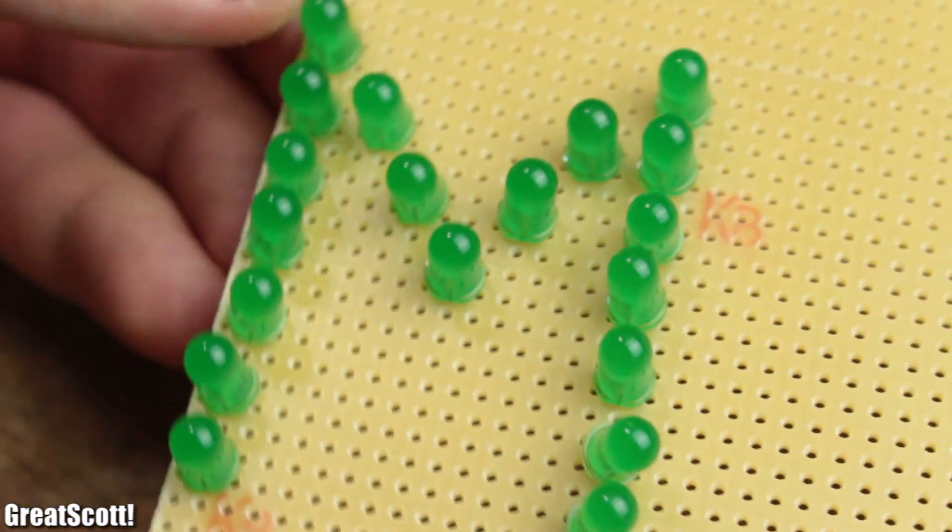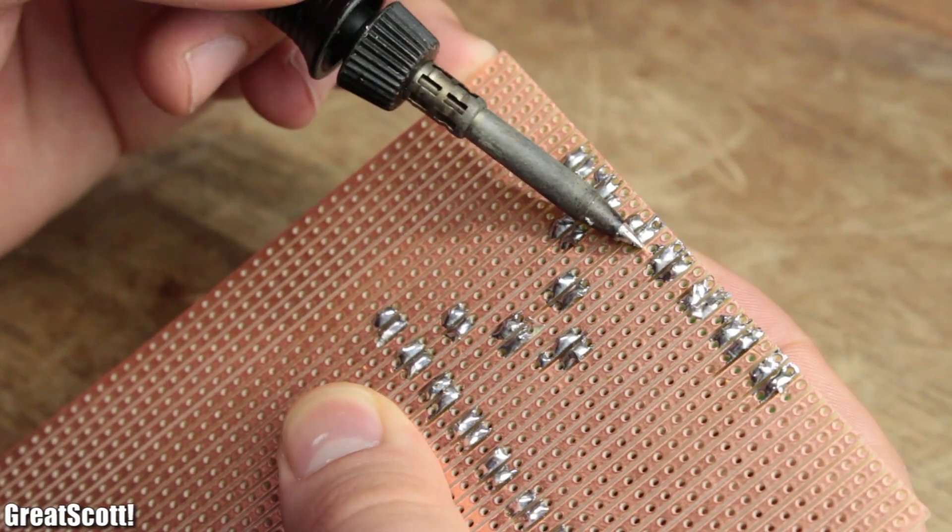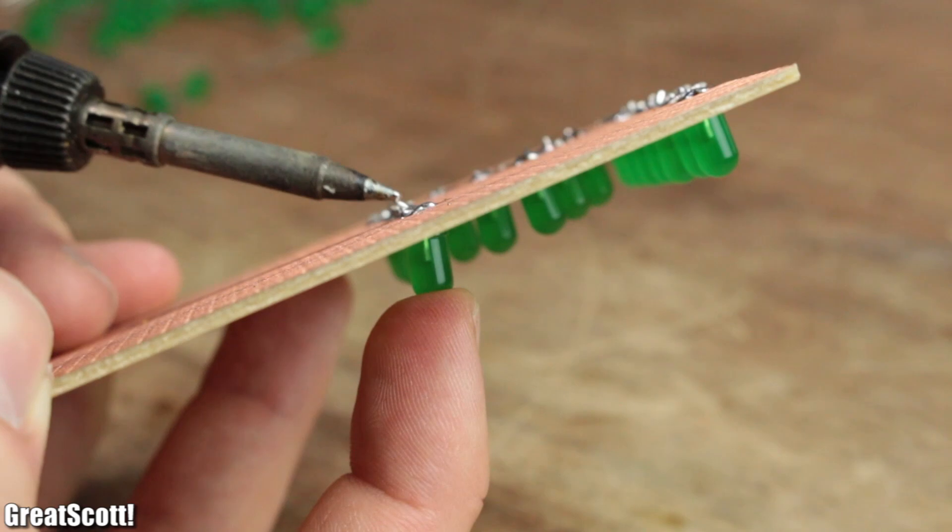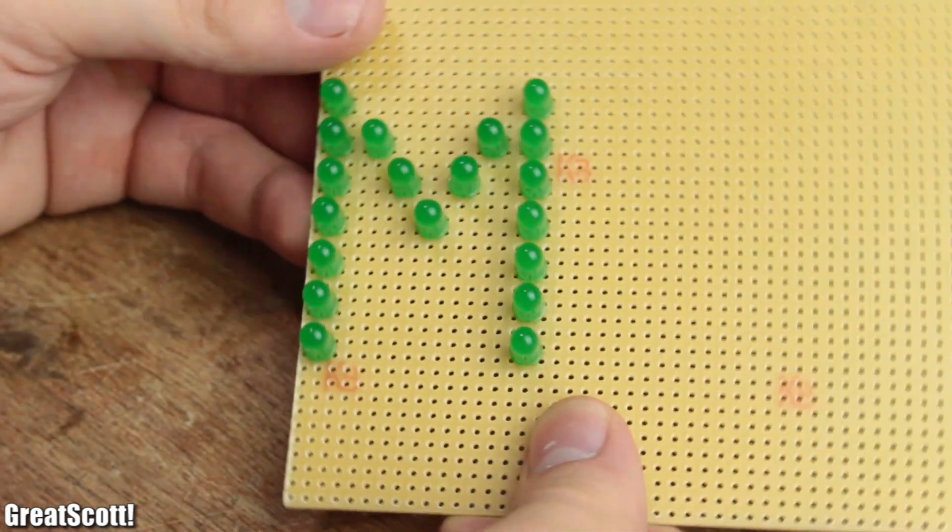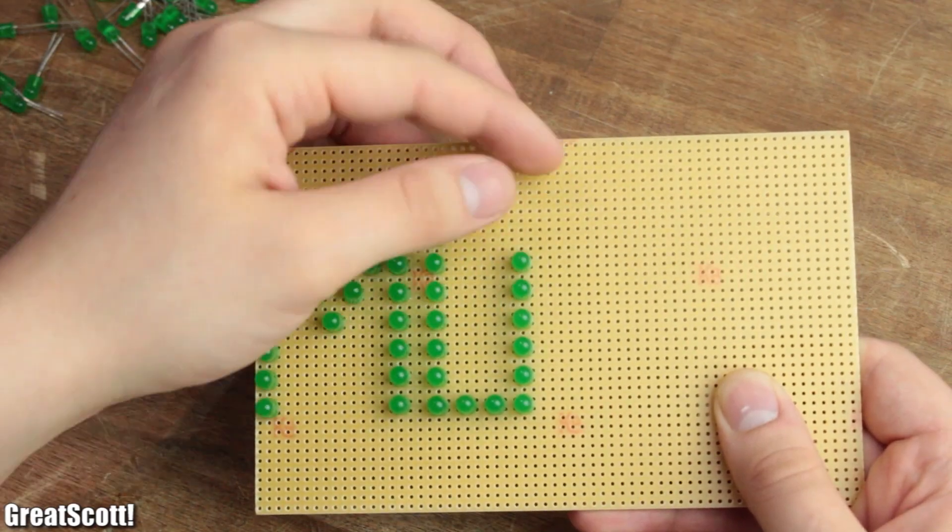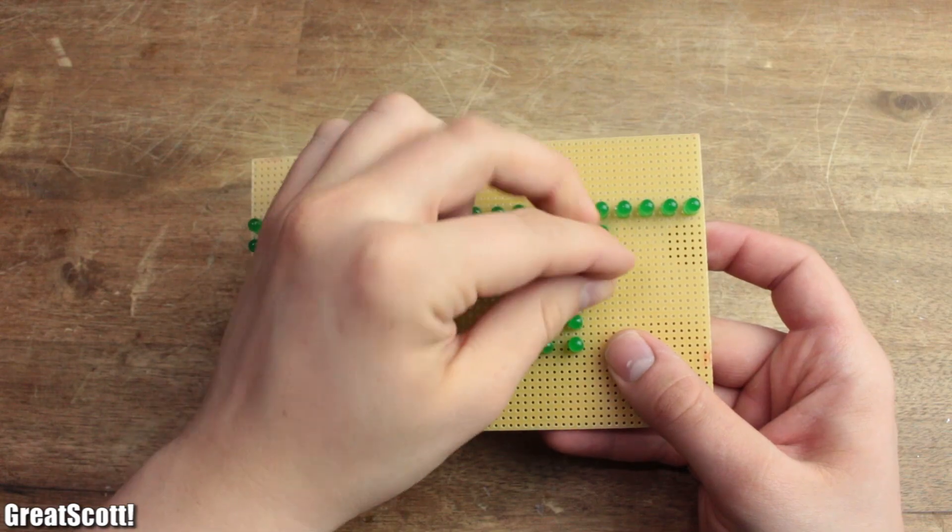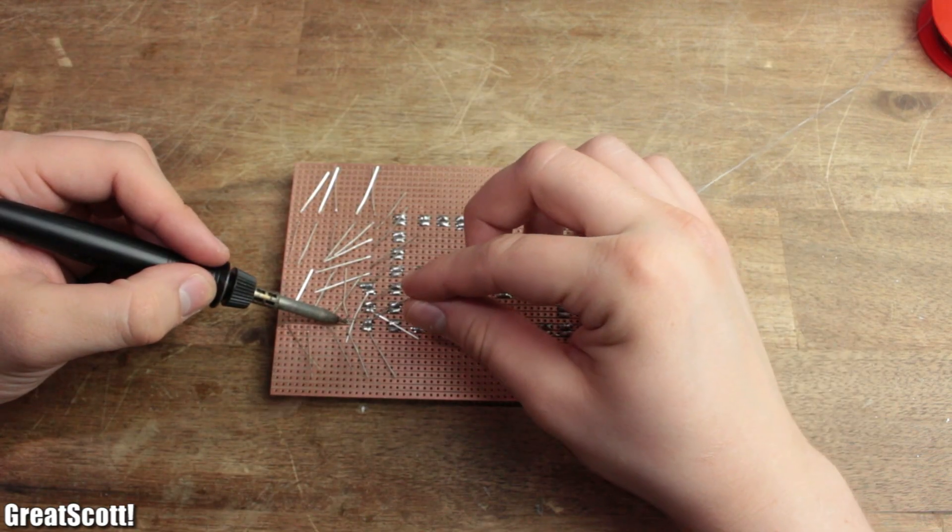But since this tactic does not fix the LEDs in their designated spot very well, I heated up the solder afterwards once again and pushed a bit from the other side. This way the results look pretty decent. I then repeated this process for every one of the remaining four letters, which took about half an hour.